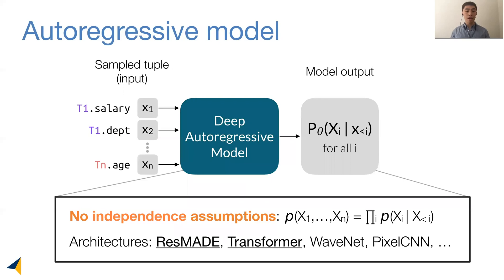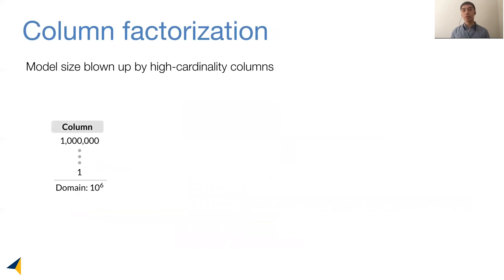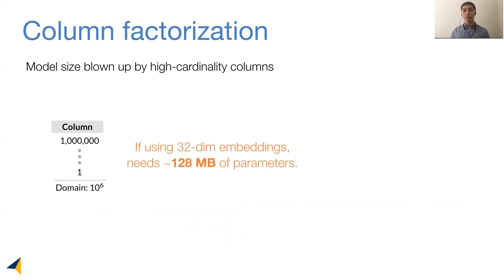There are many powerful architectures to choose from to implement this model, and NeuroCard uses ResMade and Transformer. One challenge we have to solve is that the model size can get blown up by high-cardinality columns such as IDs. For example, a column with 1 million distinct values using 32-dimensional embedding vectors would require at least 128 megabytes of parameters, which is already larger than the data size itself.